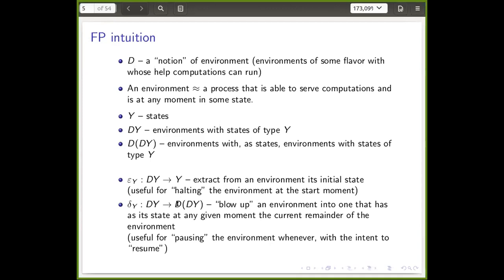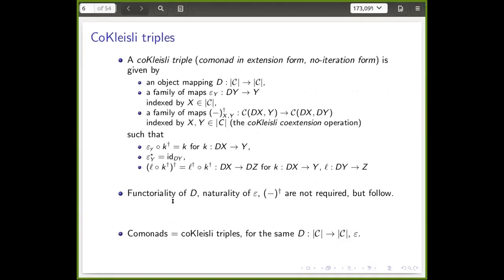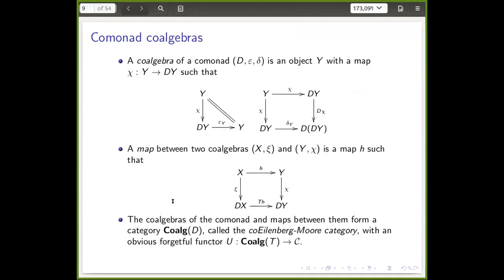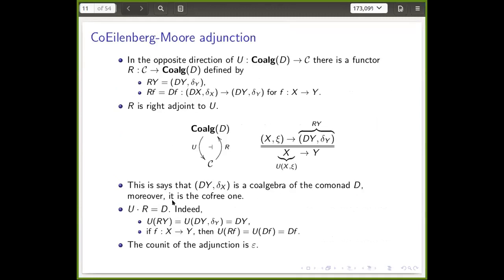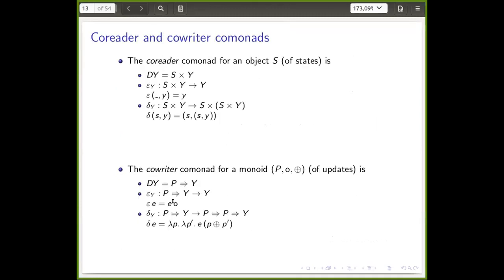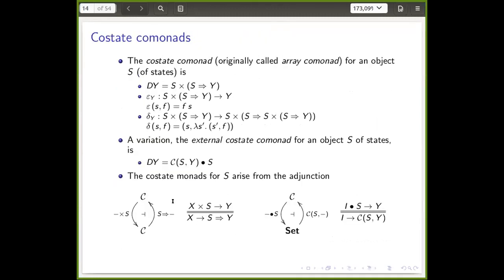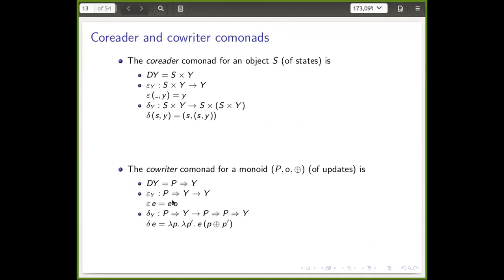The simplest example: D over Y is just streams over Y — a sequence of states the environment goes through as it evolves linearly over time. Then D of D of Y is the stream of suffixes of the original stream. The very first suffix is the stream itself, and every other suffix is one element shorter. All of the theory dualizes, and we looked at some examples.